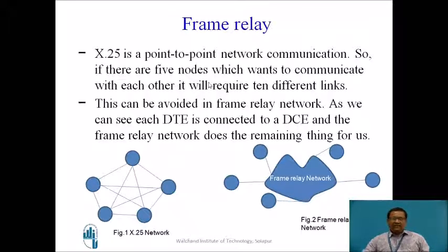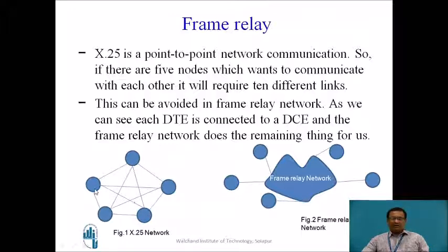Let us see the Frame Relay. Figure 1 indicates an X.25 Network and Figure 2 indicates a Frame Relay Network. There are different nodes connected with each other for transferring data between any given node to any other node. But in Frame Relay, these nodes are connected to the Frame Relay Network, and the transferring of data from a particular DTE to another DTE is done by the Frame Relay Network.